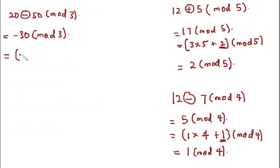3 can go into minus 30 minus 10 times. So minus 30 can be written as equal to, open bracket, minus 10 times 3. Now minus 10 times 3 is equal to minus 30. So to add the remaining number, we can see plus 0, because there's no number to add to give us minus 30.